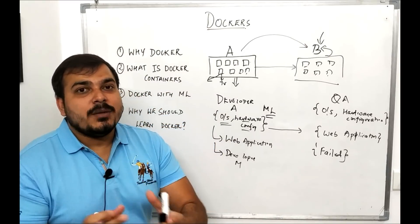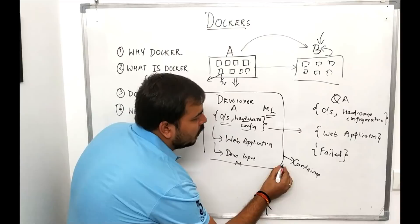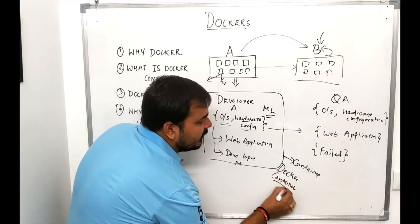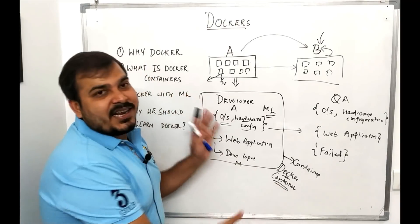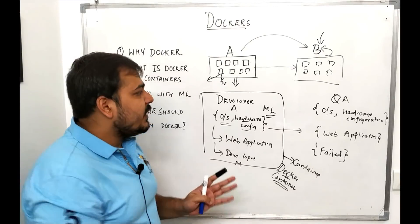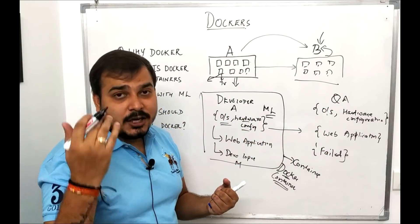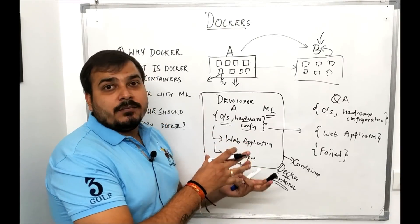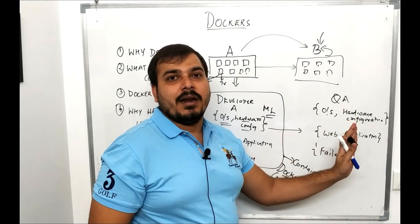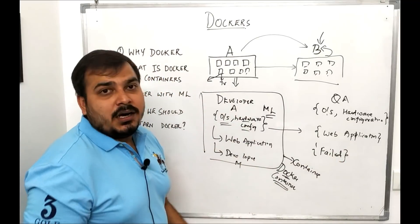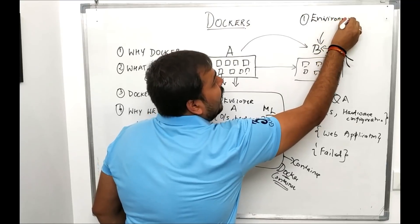We prevent this problem by putting the whole application into a container — which is also called a Docker container. Irrespective of the operating system and hardware configuration, we create a container with whatever configuration is required. We basically call it an image. You take the whole container, put it in the QA environment, install it, and the entire web application starts running in the QA environment. That is how simple it is.